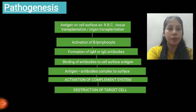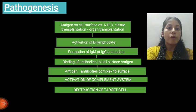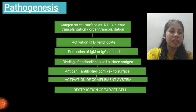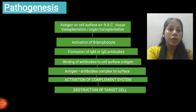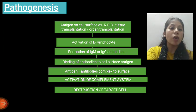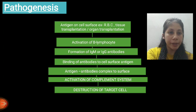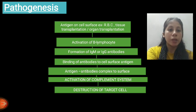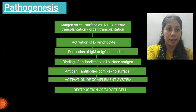Now we come to the pathogenesis of Hypersensitivity Type 2 Reaction. Whenever there is an antigen on the cell surface — for example, RBCs, tissue transplantations, organ transplantations — this causes activation of B lymphocytes, leading to formation of IgM or IgG antibodies. This causes binding of antibodies to the cell surface antigen, forming an antigen-antibody complex, which activates the complement system and causes destruction of the target cell.